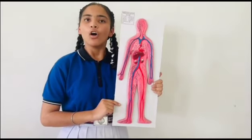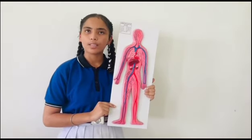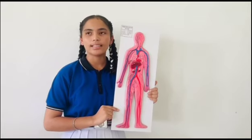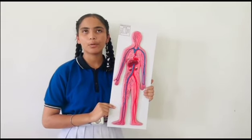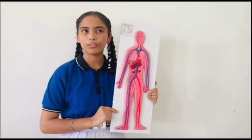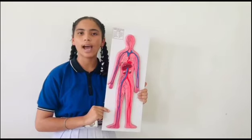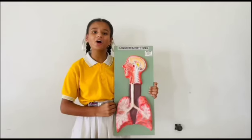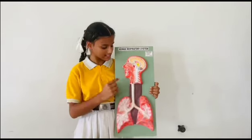Blood has four components: plasma, WBC, RBC, and platelets. WBC protects our body from diseases and RBC contains hemoglobin. This is the model of the human circulatory system.